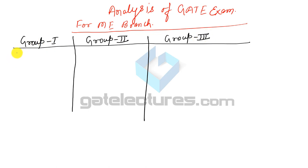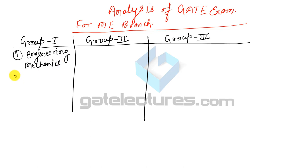In Group 1, we have: Engineering Mechanics as the first subject, Strength of Material as the second subject, Theory of Machine as the third subject, and Machine Design as the fourth subject.